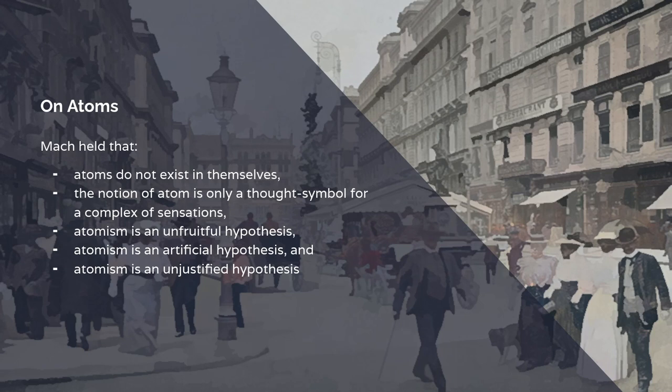Now, let's focus in on the specific anti-materialist content of the Marxist position. Marx held, firstly, that atoms don't actually exist. They don't exist in themselves. He said the notion of the atom was only a thought symbol for a complex of sensations, i.e., he starts off with the subjectivist psychological theory, that science is about sense impressions that the individual psychology experienced. He says atomism was an unfruitful hypothesis, it was artificial hypothesis, and it was unjustified. So he was attacking, at root, the whole tradition of materialism.